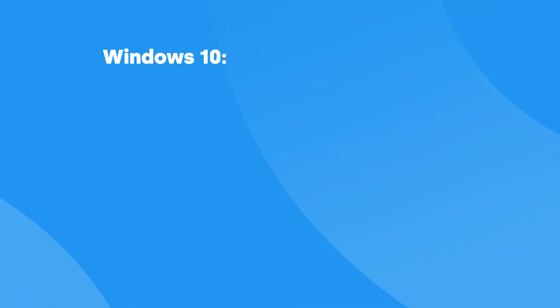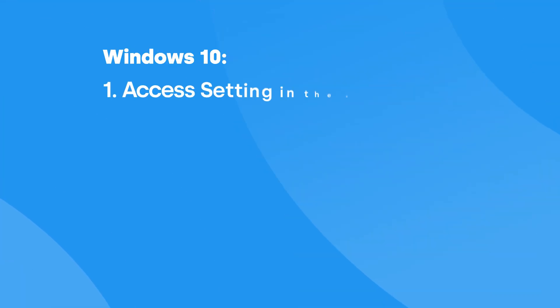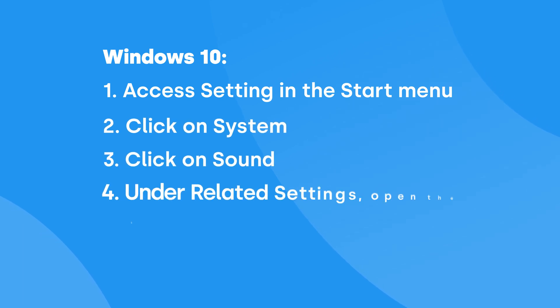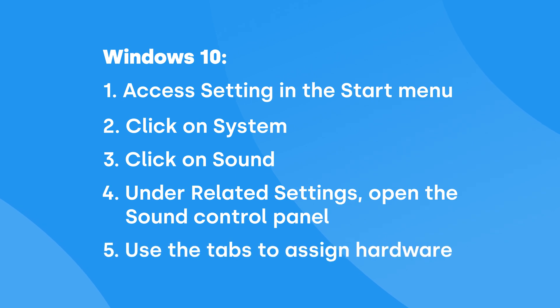For Windows 10, access Settings from the Start menu, click on System, choose Sound, open the Sound Control Panel under Related Settings, and then configure your preferred devices.